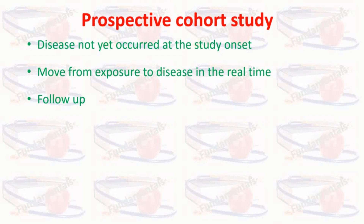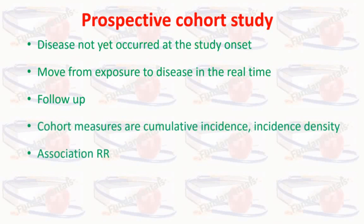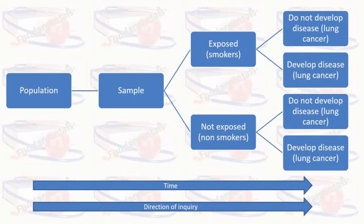The follow-up can be conducted by mail questionnaires, phone interviews, through the internet, or in person with interviews, physical examinations, and laboratory or imaging tests. For example, a study investigating the association between cigarette smoking for ten years or more and lung cancer using a prospective cohort design would start in 2020 and end in 2021, 2022, or later depending on the researcher. With this data, cumulative incidence, incidence density can be calculated and association can be seen by the relative risk.